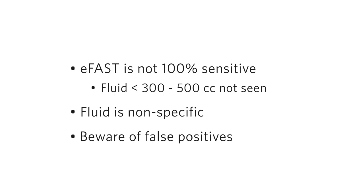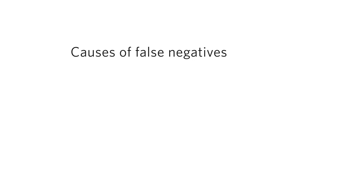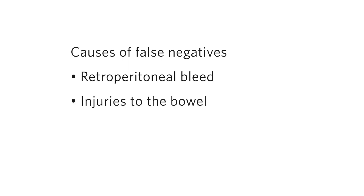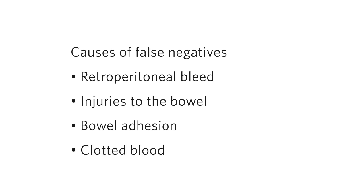Beware of false positives which can arise from perinephric fat or fluid within the bowel lumen. False negative exams are particularly problematic for your patient. Some life-threatening injuries commonly present with a negative FAST. The FAST scan does not assess the retroperitoneum, and as a result you will not see retroperitoneal bleeding — you will be unable to detect the retroperitoneal bleed of an abdominal aortic aneurysm, a ruptured kidney, or that secondary to an unstable pelvic fracture. Injuries to bowel often do not present with a positive FAST but can result in life-threatening peritonitis. Remember that bowel adhesions may prevent the normal flow of intra-abdominal fluid into the right and left-sided gutters — never be overly confident about a negative FAST in a patient with previous abdominal surgery. Clotted blood is echogenic and will be difficult to see. FAST is less helpful in delayed presentations of trauma.